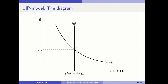When it comes to a graph, we work in a diagram with the exchange rate on the vertical axis and the home return and foreign return on the horizontal axis. The home return curve will be a vertical line and the foreign return curve is downward sloping and convex. I would like to confirm that this is indeed the case.